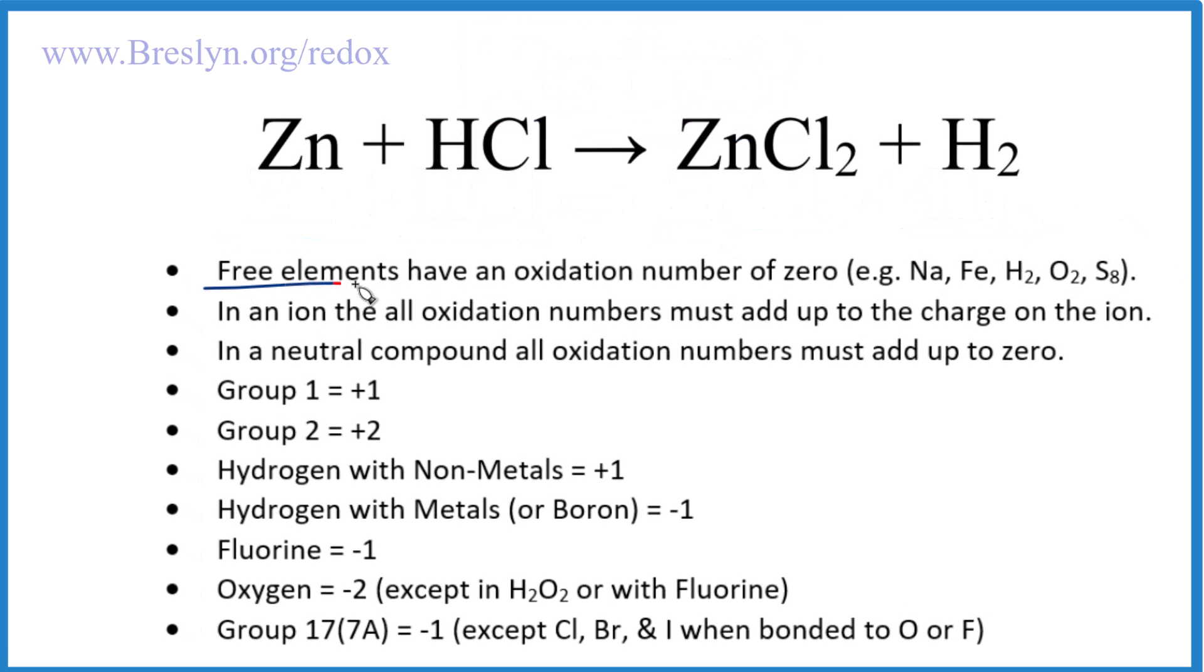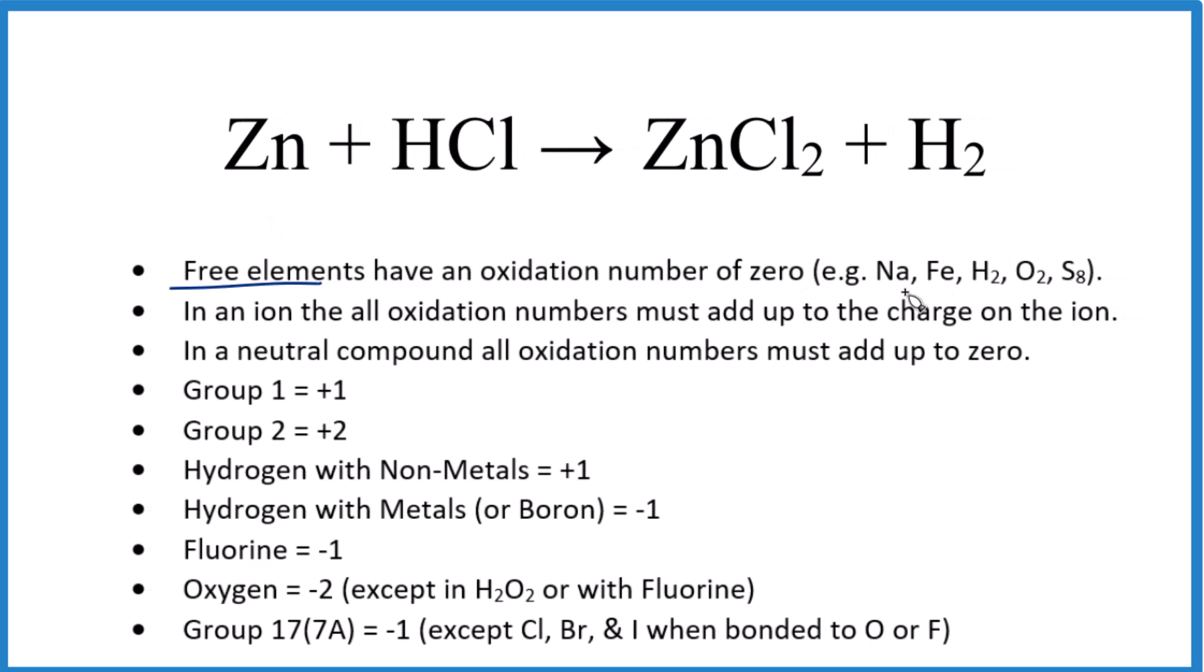So free elements, these are elements that only have one type of atom, like Na, Fe, H2, O2. These free elements have an oxidation number of zero. Zn is a free element, zero. H2, right here in our list, free element, zero.